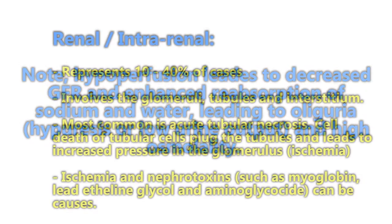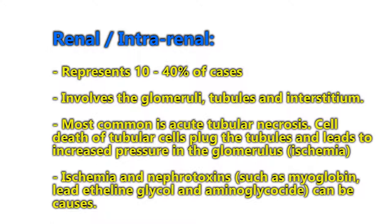The second category is renal, or intrinsic kidney disease, which represents about 10% to 40% of cases. It involves the glomeruli, tubules, and interstitium. The most common intrarenal injury is acute tubular necrosis. Cell death of tubular cells plugs the tubules and leads to increased pressure in the glomerulus.